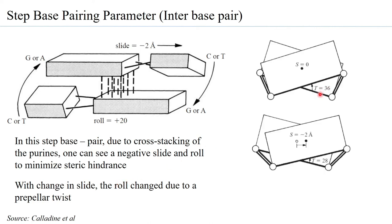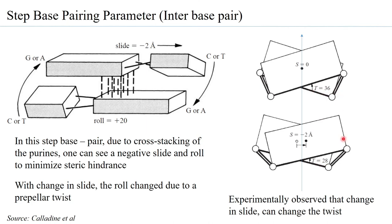It has also been experimentally observed that when you look at slide and twist for two base pairs, if the slide changes the twist angle also differs. So experimentally, a change in slide can lead to a change in twist as well. These are different examples of how different parameters within the helix can take place simultaneously.